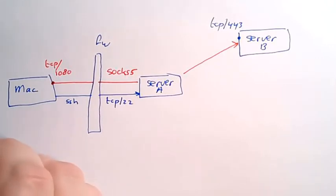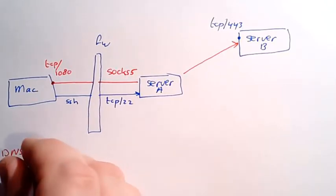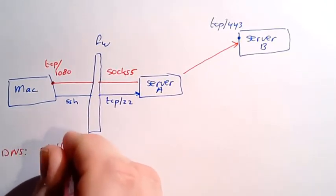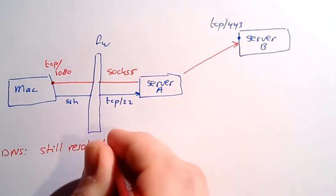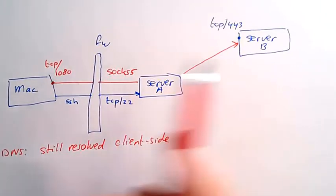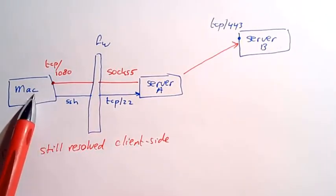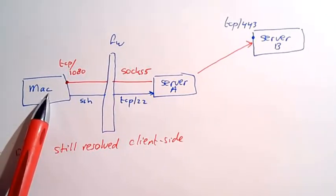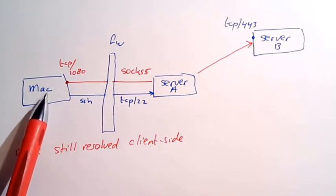But note, DNS is still resolved client side. In other words, if server B does not have a DNS entry that's accessible to the Mac, I have to access it by IP address, otherwise it's not going to work.